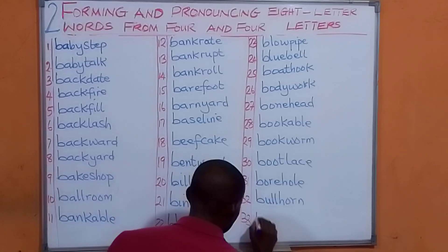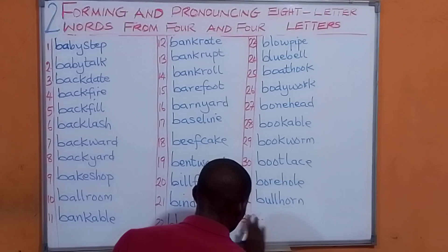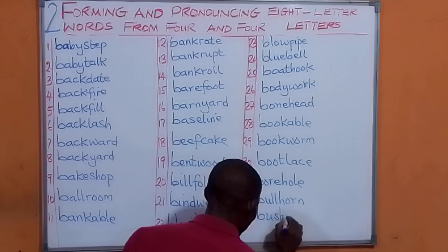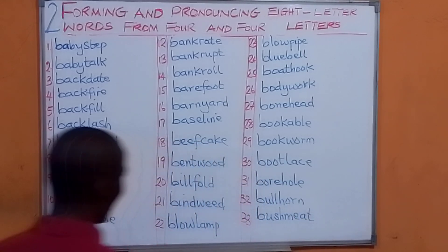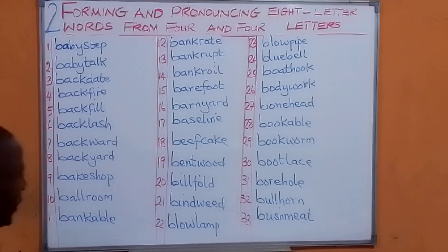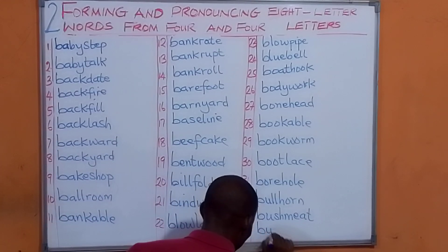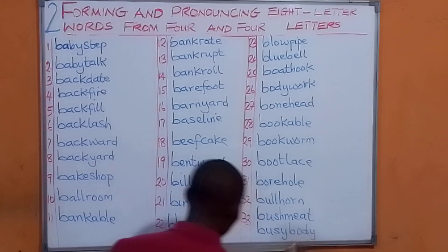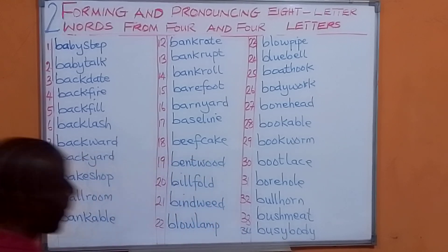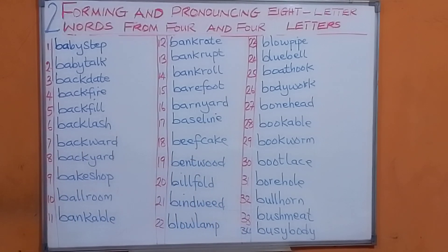What if we have bush? We have bush and meat. We are going to have bushmeat. Let us have busy and body. We are going to have busybody. We can also have busywork.